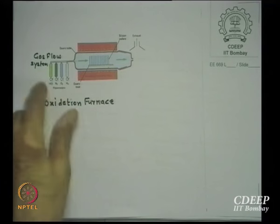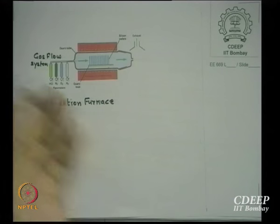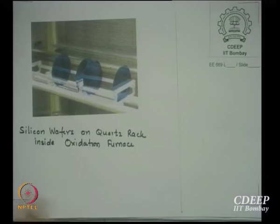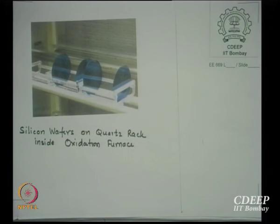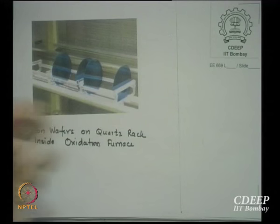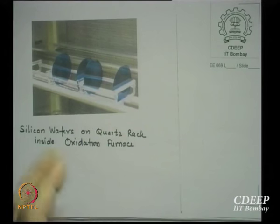If you want hydrogen insertion, you can also do that. Earlier we used rotameters; for more accuracy, we now use mass flow meters for a given gas. The silicon wafers are mounted vertically in a quartz rack, fitting into slots. Larger the rack size, larger the number of wafers that can be introduced inside. Any number of wafers can be loaded depending on the central temperature zone width and the rack size.